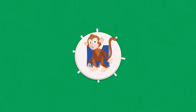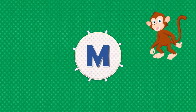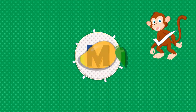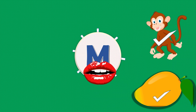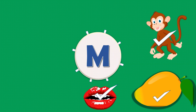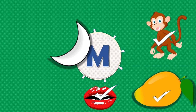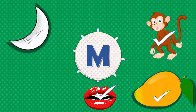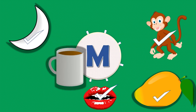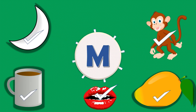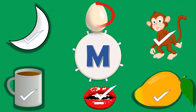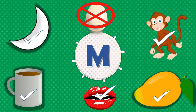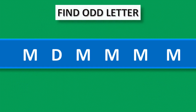M for monkey, correct, yes. M for mango, correct, yes. M for mouth, correct, yes. M for moon, correct, yes. M for egg — no, it's wrong. Find odd letter.